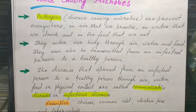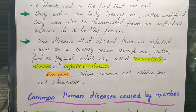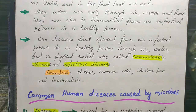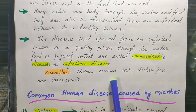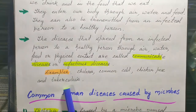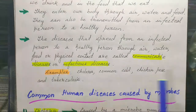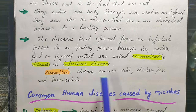Diseases that spread from an infected person to a healthy person through air, water, food, or any physical contact are called communicable diseases or infectious diseases. Examples are cholera, common cold, chicken pox, and tuberculosis (TB).